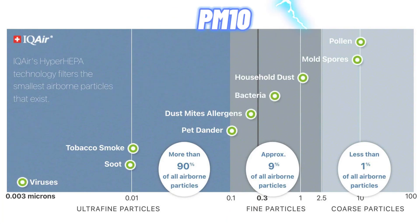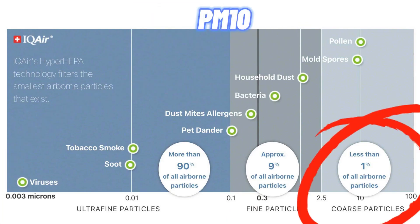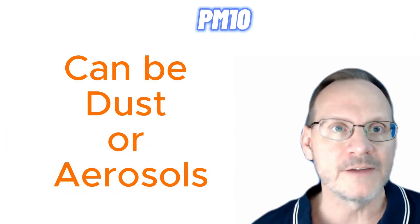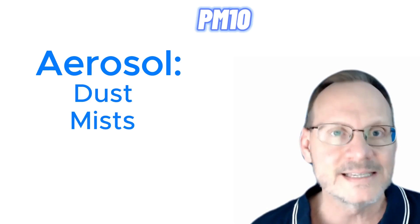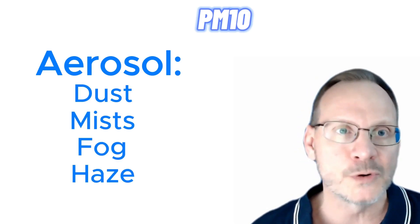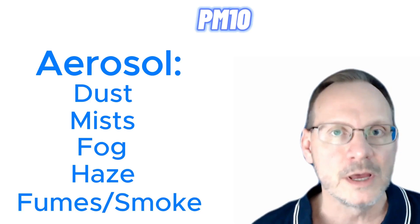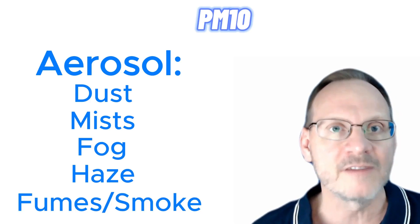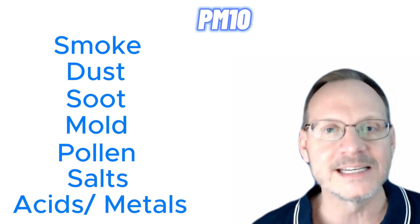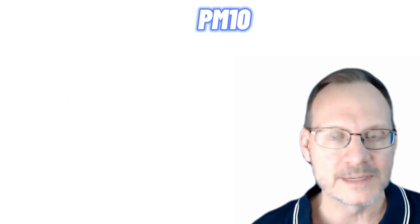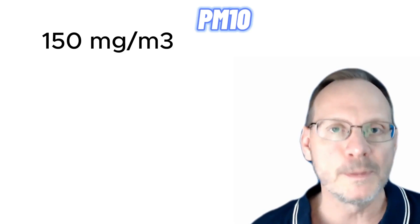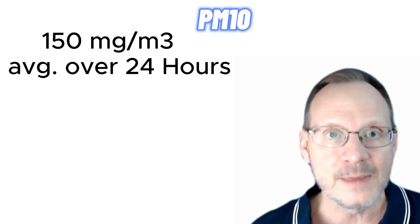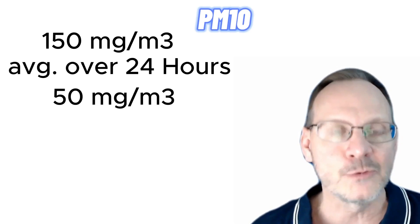PM10 falls under the coarse particles heading. PM10 can be floating dust or aerosols. An aerosol may be defined as a suspension of particles or droplets in the air, and some examples of this are airborne dust, mists, fog, haze, fumes, or even smoke. So PM10 includes a wide variety of particles such as smoke, dust, soot, mold, pollen, salts, acids, and even metals. The current federal health standard for PM10 is set at 150 milligrams per cubic meter of air averaged over a 24-hour period, and 50 milligrams per cubic meter of air for an annual average.